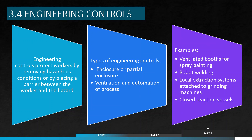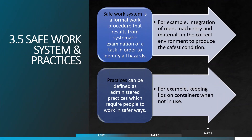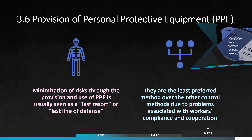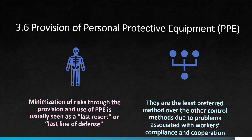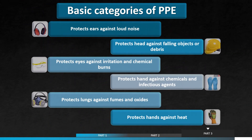Engineering controls are a very reliable way to control worker exposures, as long as the controls are designed, used, and maintained properly. Safe work practices are generally written methods outlining how to perform a task with minimum risk to people. Personal protective equipment is the equipment that will protect the user against health or safety risks at work.